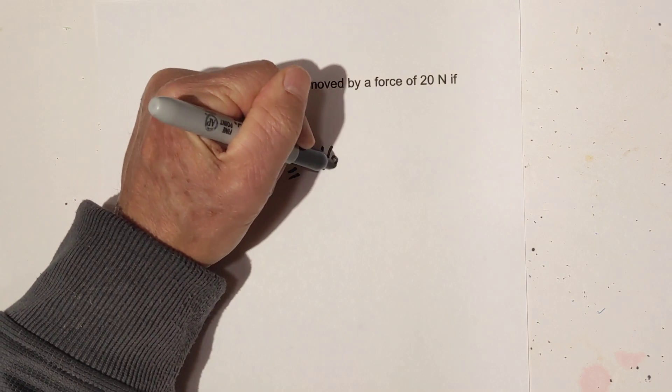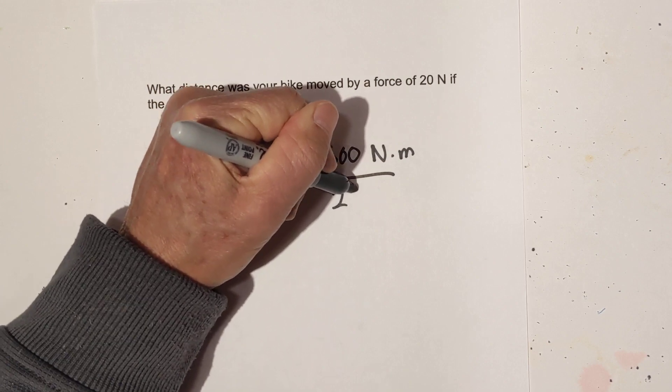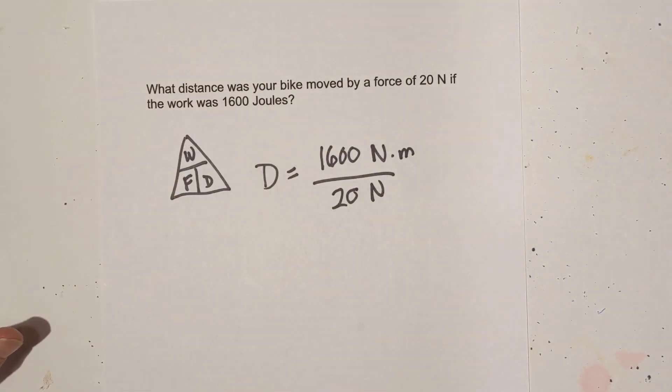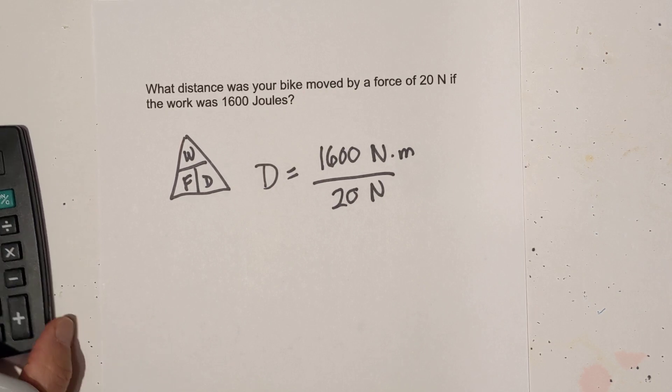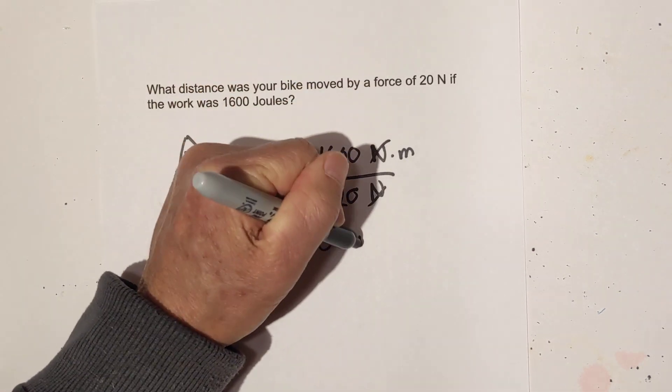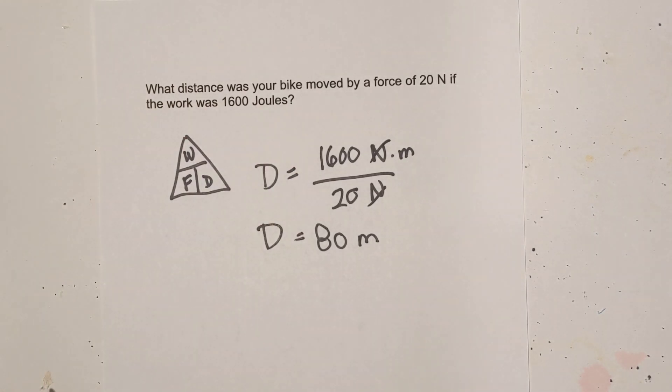Work is 1600 joules, newtons times meters, and I'm going to divide that by 20 newtons. 1600 divided by 20 is 80. Newtons cancel, you're left with meters, so it's a distance of 80 meters.